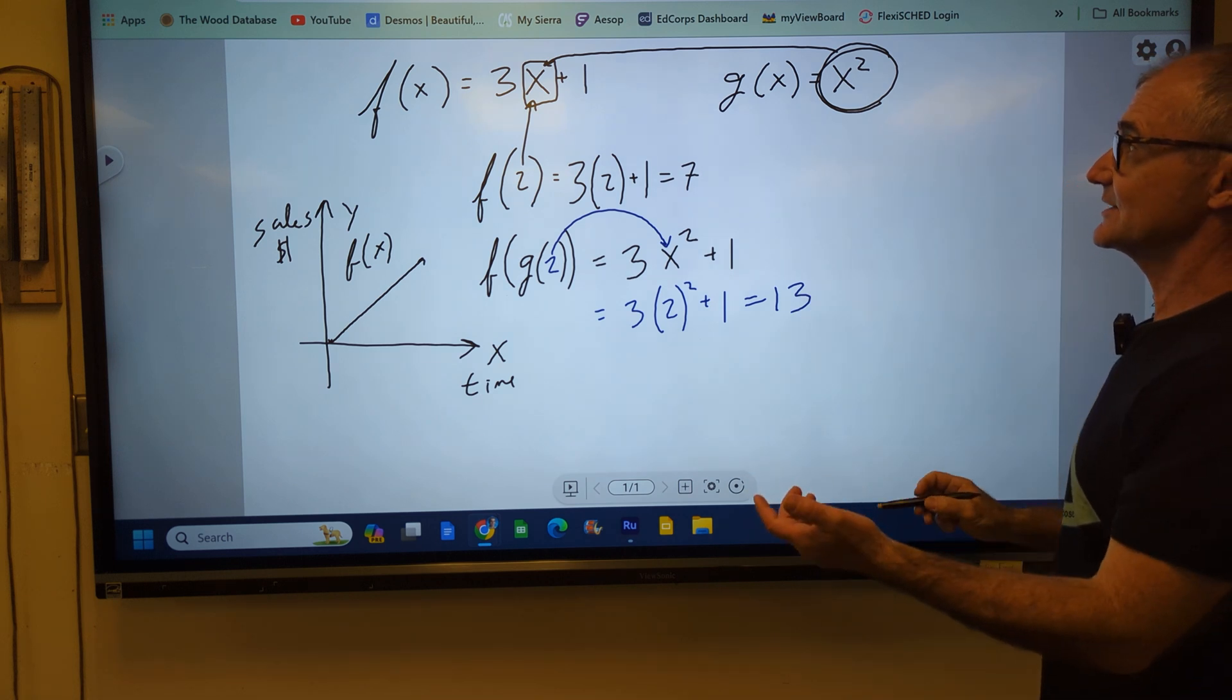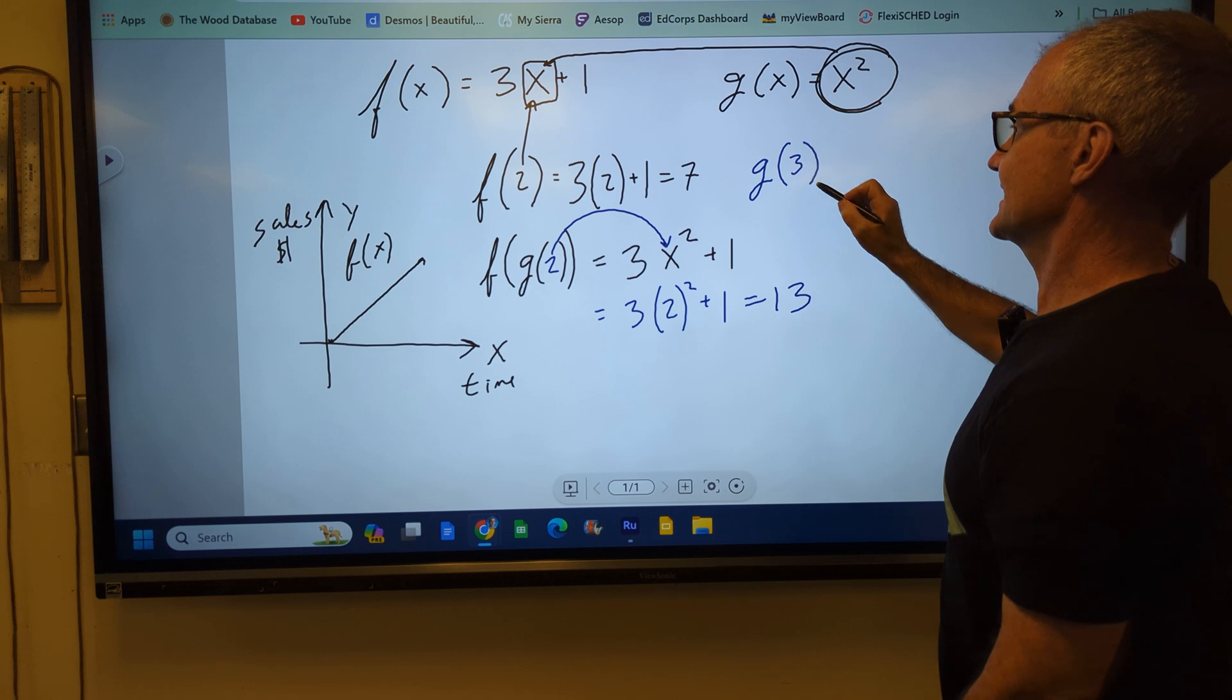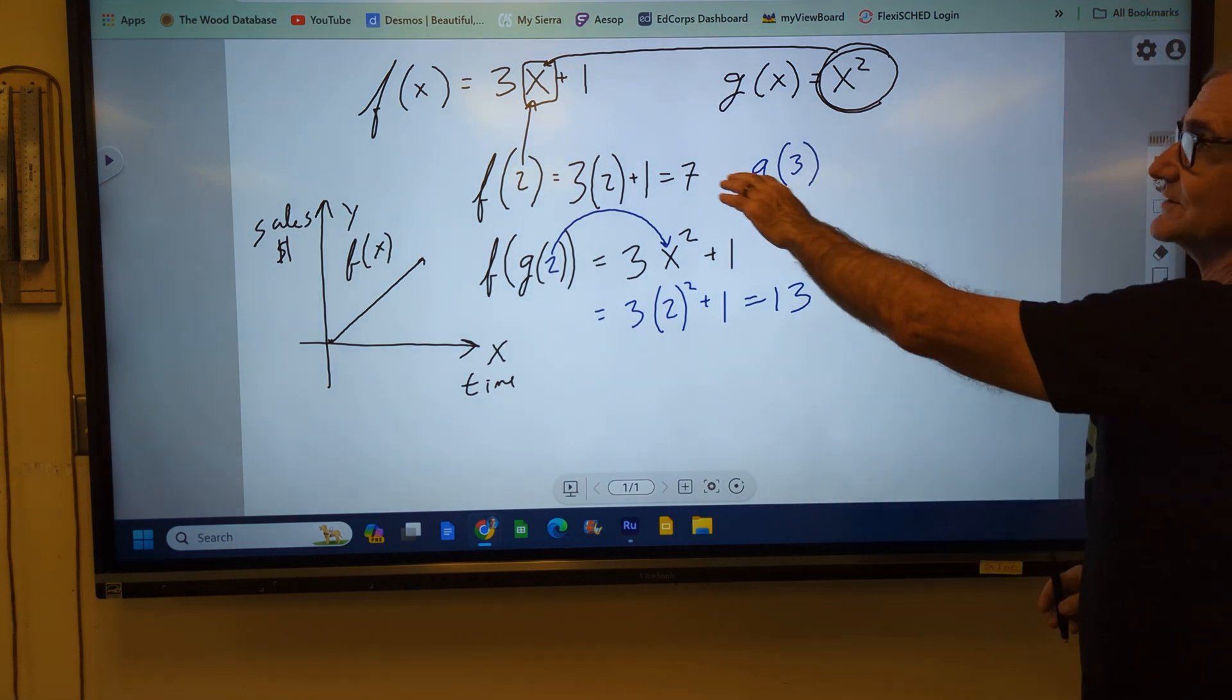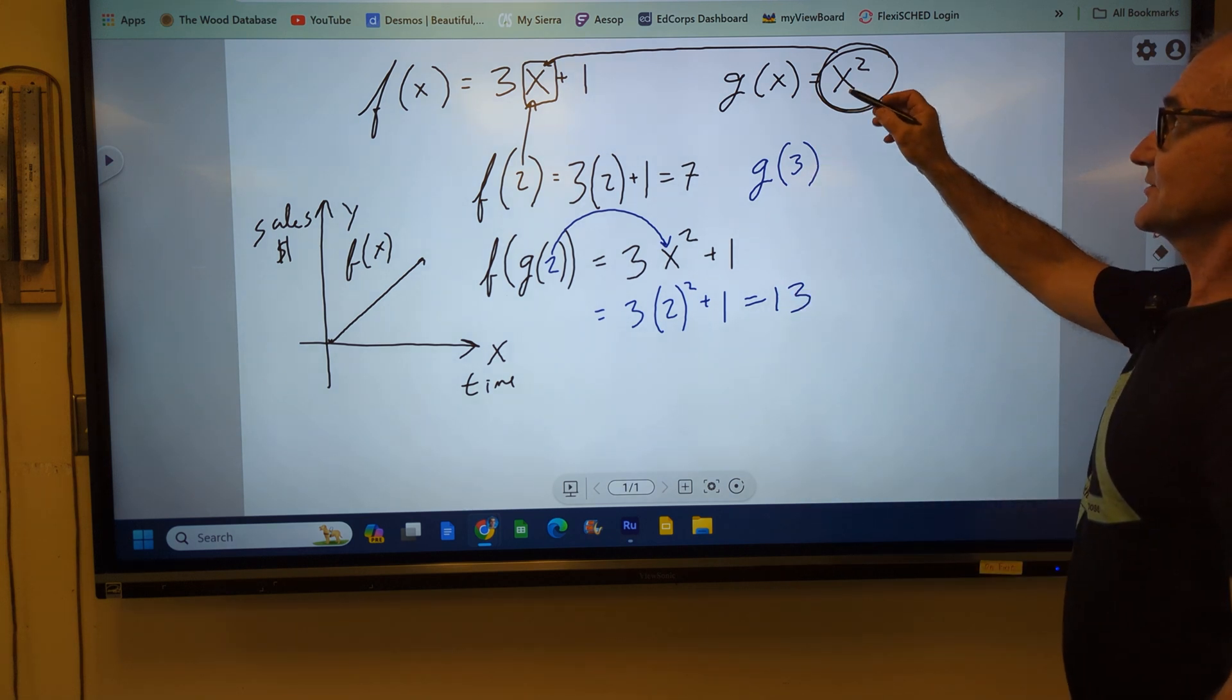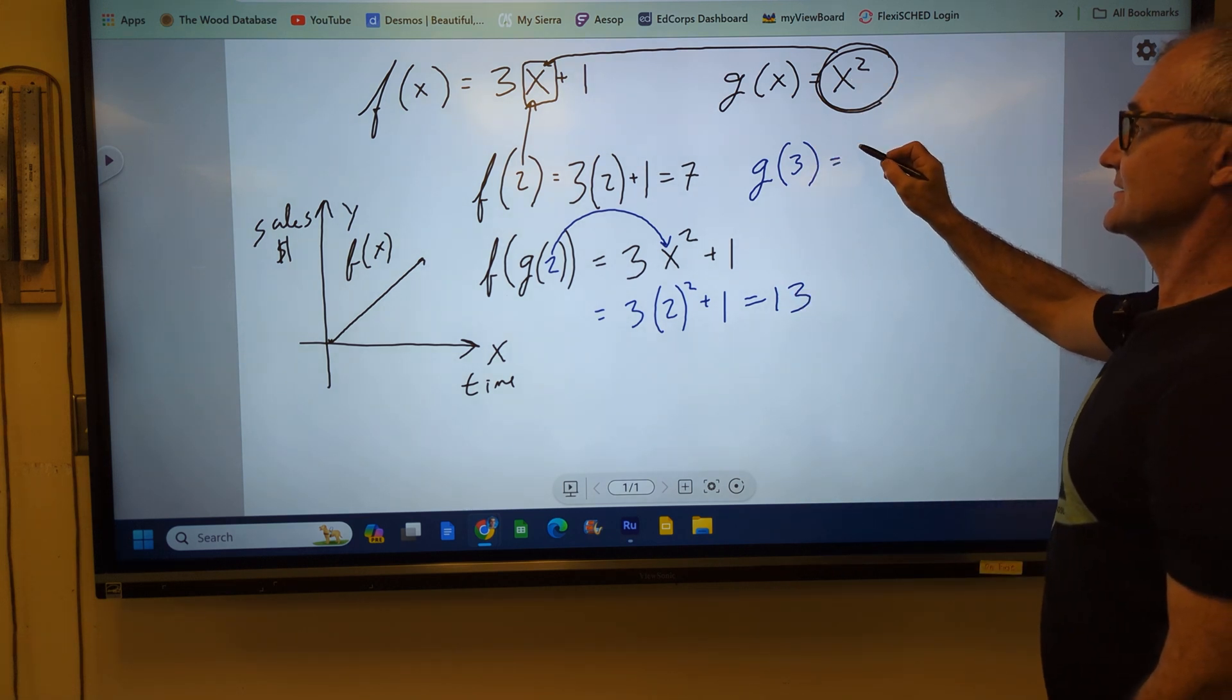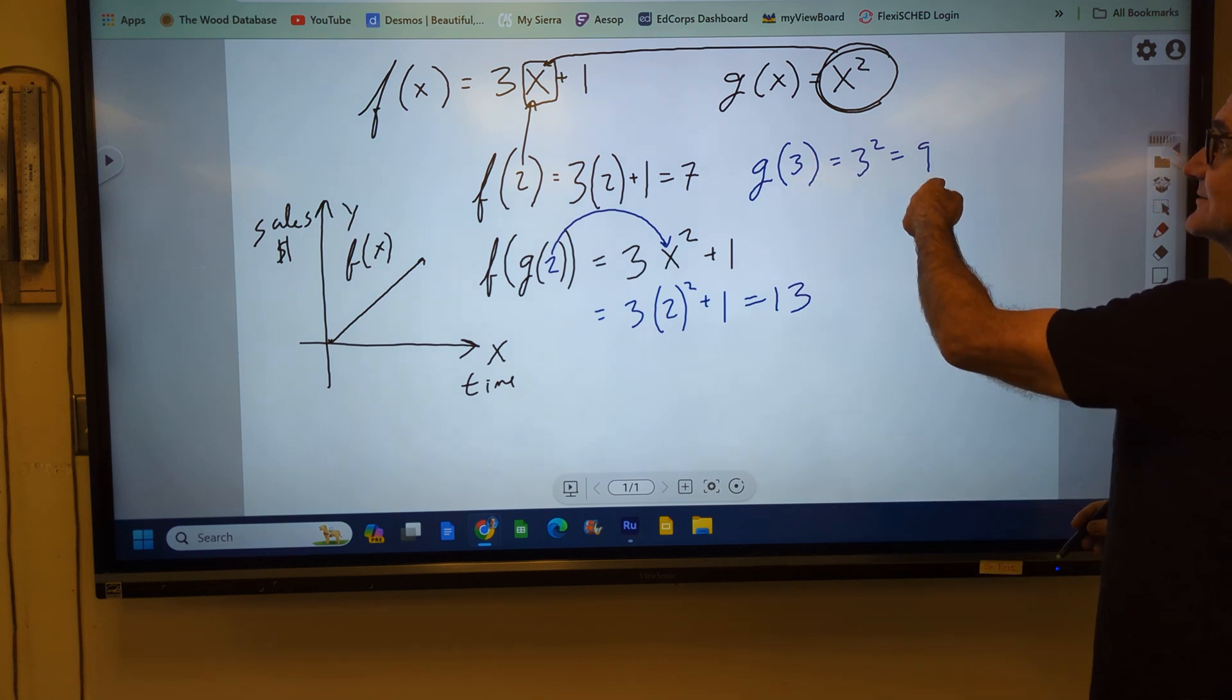Another thing you might see instead is g of 3. Let's say that first. g of 3, which function do I go in? I go in g of x. g of x is x squared. Take 3, plug it in there. 3 squared is equal to 9. So g of 3 is equal to 9.